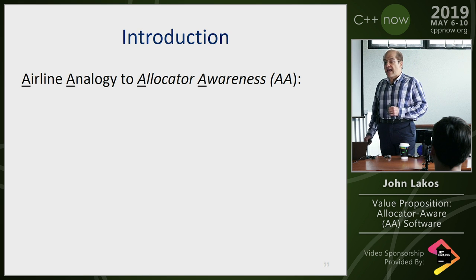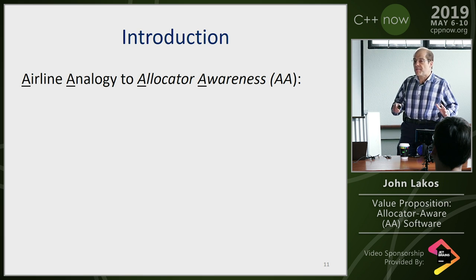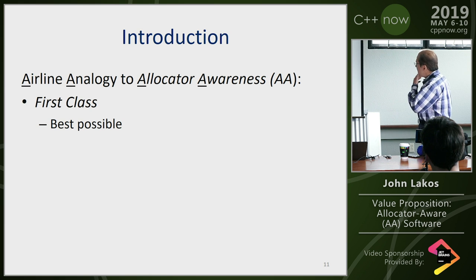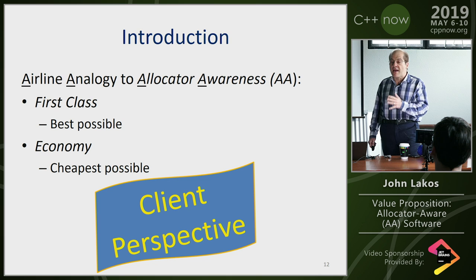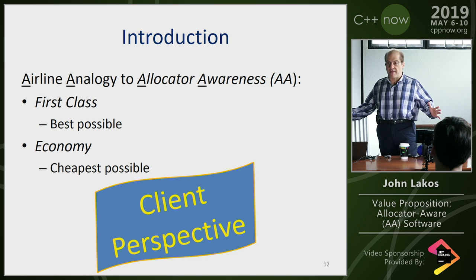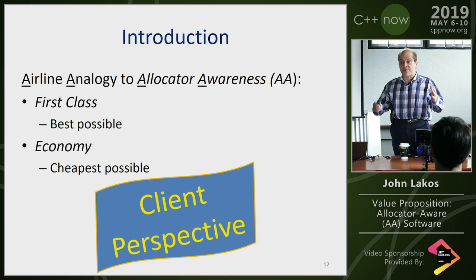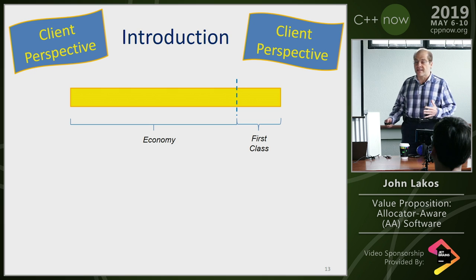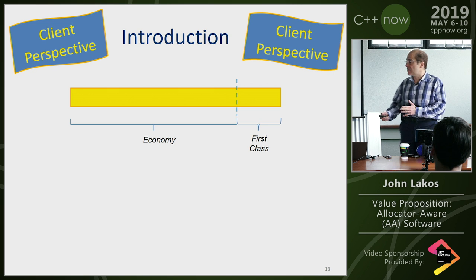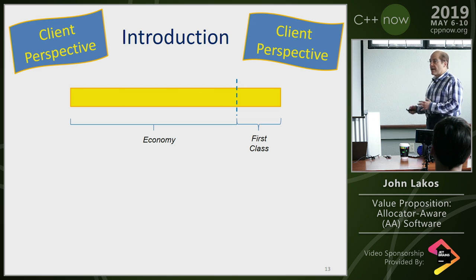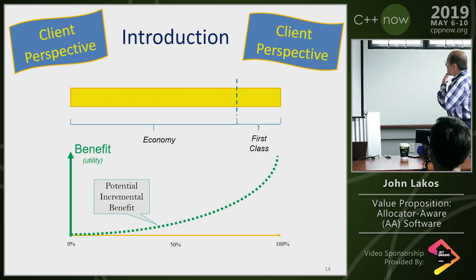Now we're going to talk about the airline analogy. You need to understand allocators well to understand this analogy at first, because it seems like the allocators are obvious — but not so much. Then as you go back and forth it reinforces it. First class is the best possible; economy is the cheapest possible — from a client perspective. If you're flying and have money to burn, you go first class; if you just want to get there, you go economy. When they invented planes, there was one class. Then somebody said, I can make more money if I discriminate — classical price discrimination. So we divided service into first class and economy, but basically everybody's going to the same place.